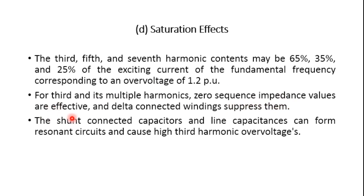If zero sequence impedance values are significant and the winding is connected star to delta, the third harmonic currents circulate within the transformer legs. The shunt-connected capacitors and line capacitances form a resonance circuit, causing high third harmonic overvoltages. When such overvoltages are added, the rise in voltage in the lines may be significant for higher harmonics, and a series resonance between the transformer inductance and the line capacitances can produce even higher voltages.